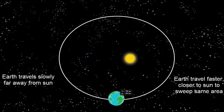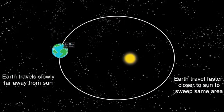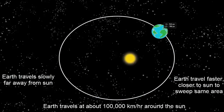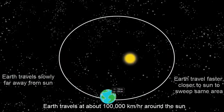Simply put, the speed of the earth is faster when it is closer to sun and slower when far away. In fact, earth moves at 100,000 km per hour around the sun.